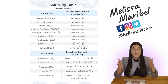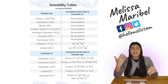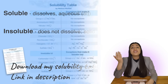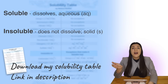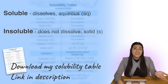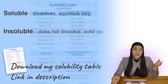A solubility table helps us identify whether a compound is soluble or insoluble. If it's soluble, that means it dissolves and it's aqueous. If it's insoluble, that means it does not dissolve and it's a solid.